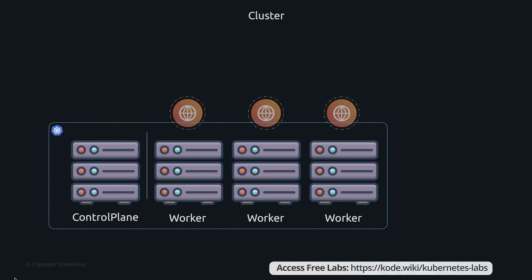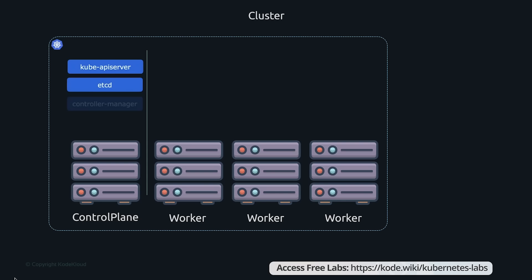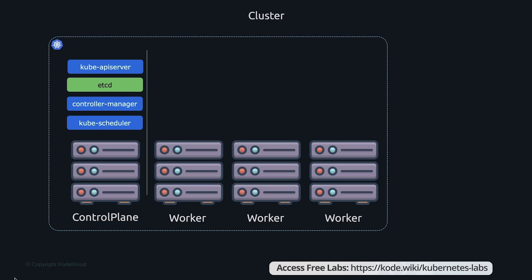When you install Kubernetes on a system, you're actually installing the following components: an API server, an etcd service, controllers, and schedulers. The API server acts as the front-end for Kubernetes — users, management devices, third-party tools, and command-line interfaces all talk to the API server to interact with the Kubernetes cluster. etcd is a distributed, reliable key-value store used by Kubernetes to store all data used to manage the cluster, including information about the nodes, the applications running, and any other cluster information.